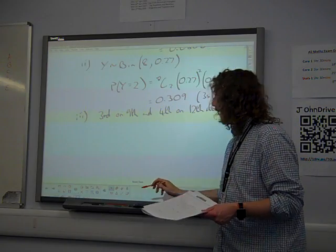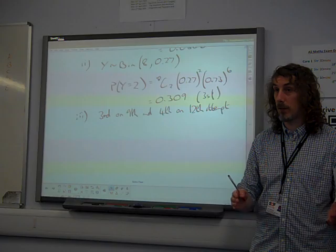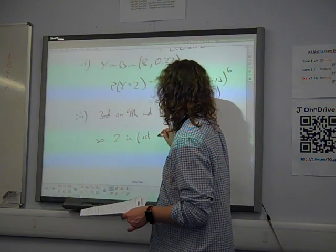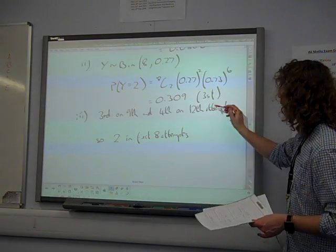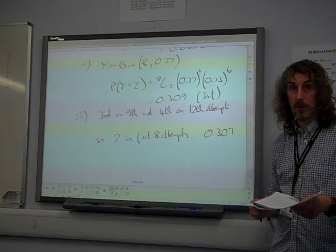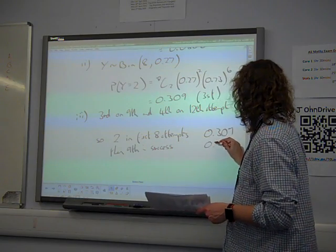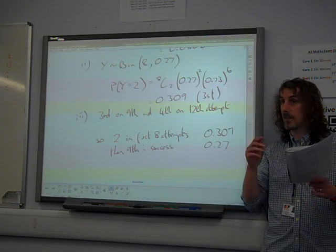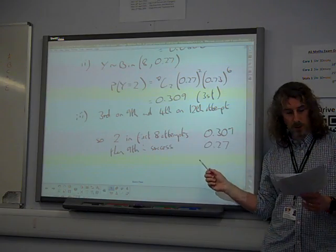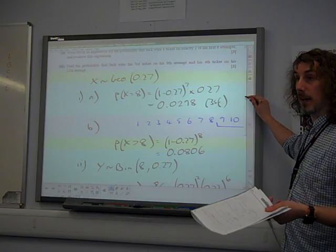If his third ticket is going to come on exactly the ninth attempt, then the first eight attempts must have contained two successes. So the first thing we add is two in the first eight attempts. That needs to have happened. Well, that's great. We know that. That is 0.309. We then need the ninth to be a success. Okay. The probability of the ninth attempt being a success is 0.27 because all of these attempts are independent, and each attempt has a probability of 0.27. So the ninth attempt on its own being successful is 0.27.